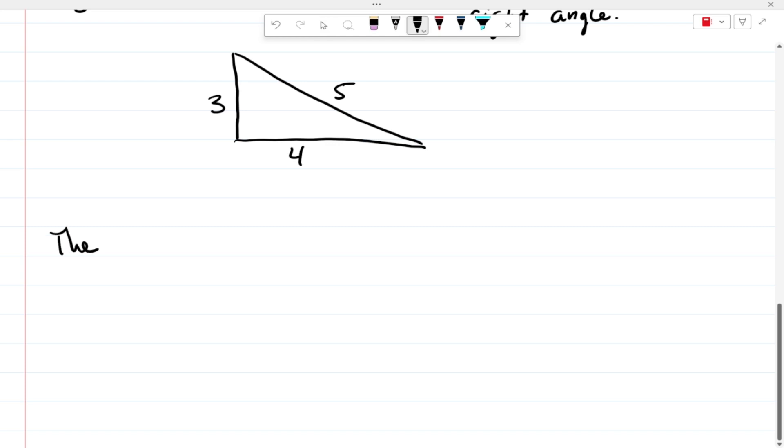Now one property that all triangles have is that the sum of all the angles inside of a triangle is equal to 180 degrees.